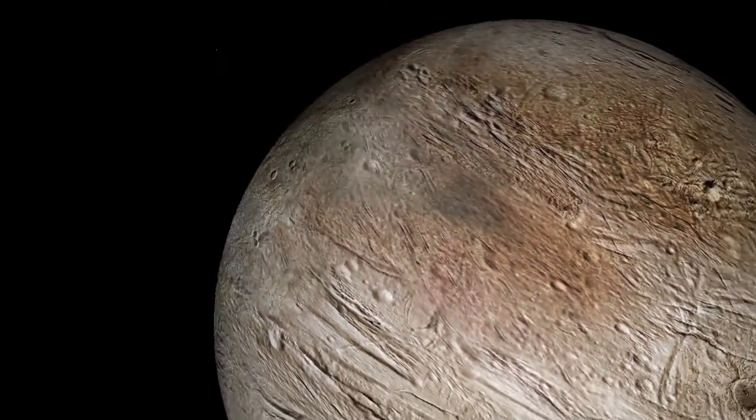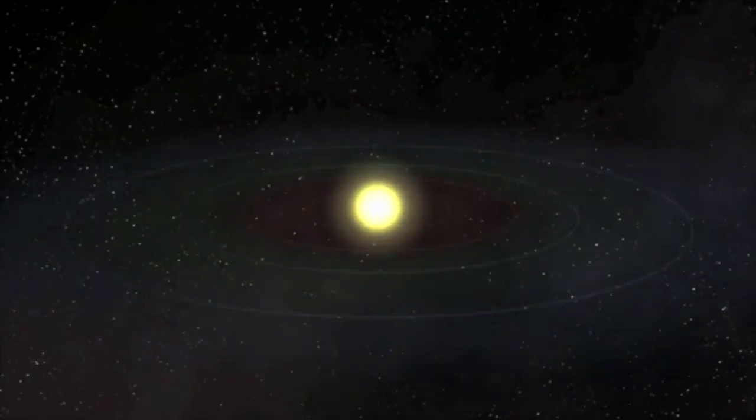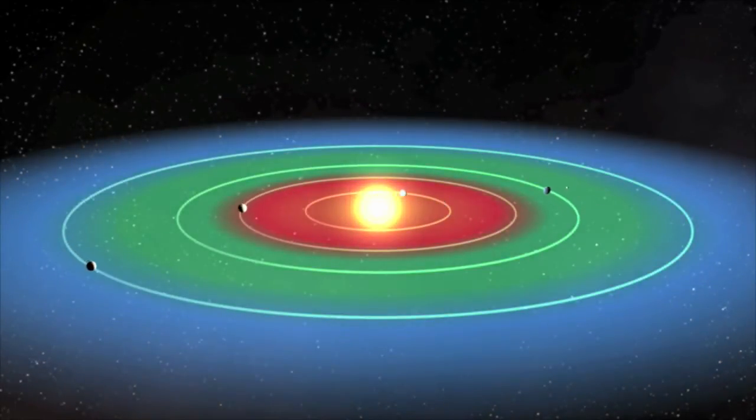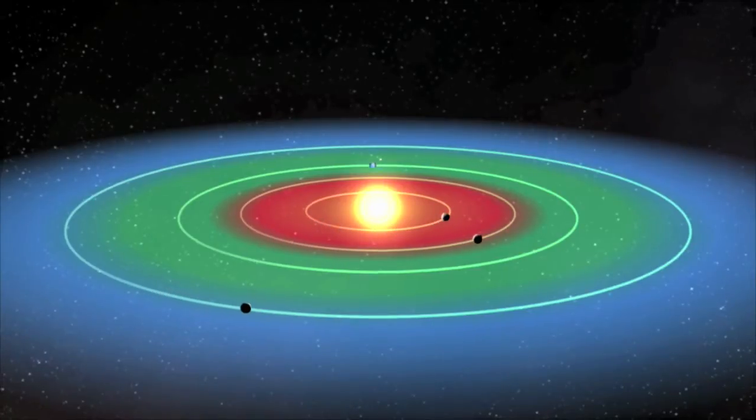The Kepler spacecraft is designed to look for small, Earth-like planets that lie within what is known as a habitable zone. This is the distance from a star that would allow for the presence of liquid water.